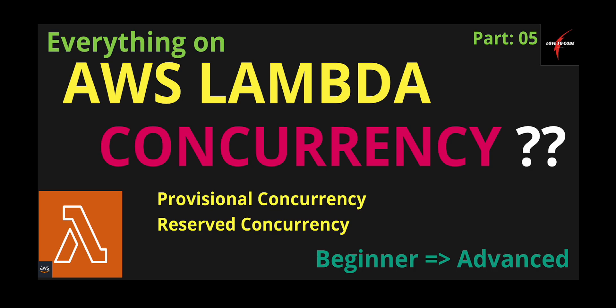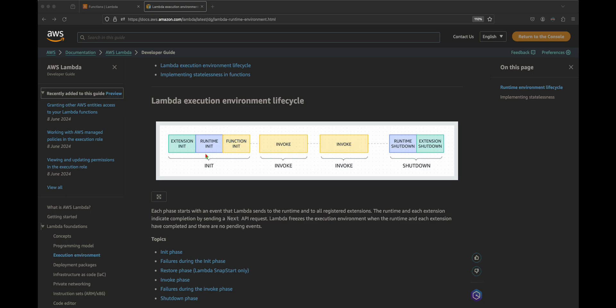In this video I'm going to show what provisional concurrency is and how we enable and implement it using a demo. Furthermore, I will cover reserved concurrency, which is another part of Lambda concurrency. Lastly, I will talk about the cost associated with provisional concurrency, as cost always matters. Please like and subscribe if you like this video — it would be really appreciated.